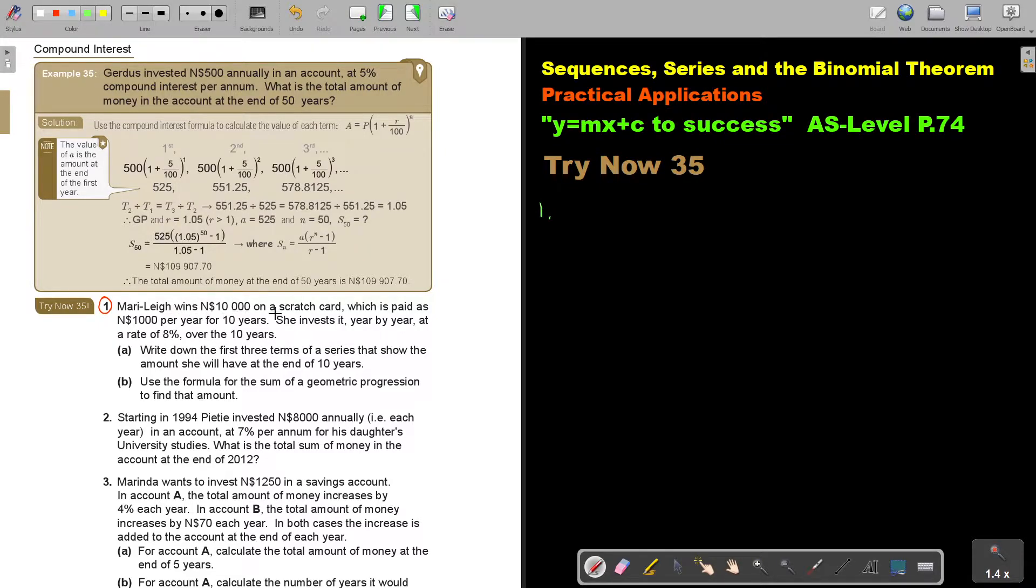Marlee wins 10,000 in a scratch card, which is paid as 1,000 per year for 10 years. She invested it year by year at the rate of 8% over the 10 years. Write out the first three terms of a series that shows the amount she will have at the end of 10 years. So it's first just the series.